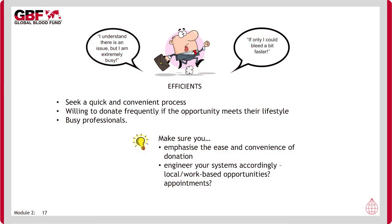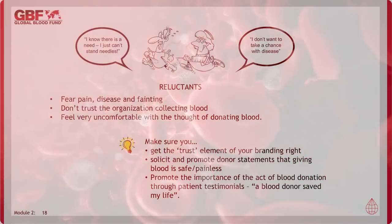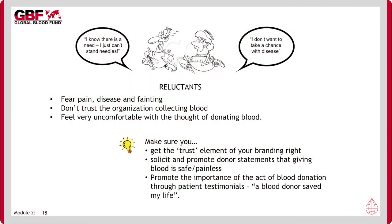Efficiency donors are time-pressured and, although they recognize the value of blood donation, they are only likely to engage if doing so is made quick and easy for them. This means operations have to be structured in such a way that queuing is minimized and the promise of a quick and easy process can be honored. As the name suggests, the Reluctance group engages with donation reluctantly. It is important that they trust your organization, so all visual cues such as an organized process and clean environment are important.